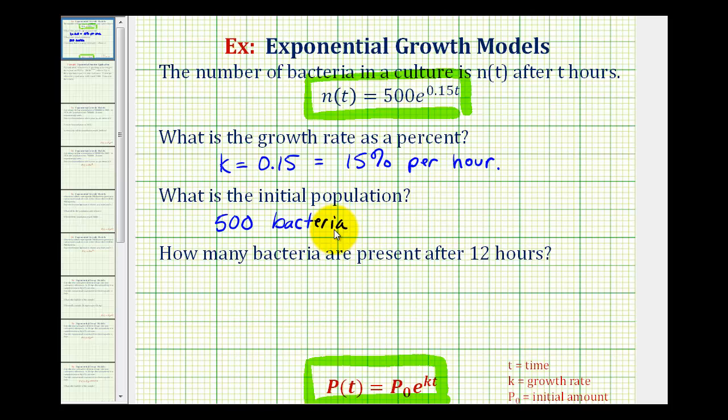We should also be able to make the connection that we could just find n of 0. Let's go ahead and just verify that. We would have 500 times e raised to the power of 0.15 times 0, which would just be e to the 0. Anything to the 0 power is equal to 1, so this verifies again the initial population is 500 bacteria.